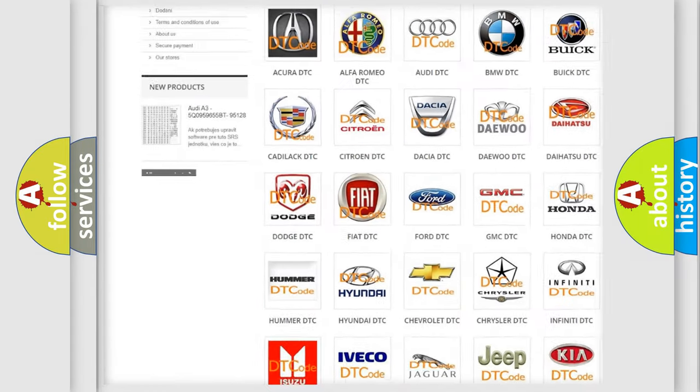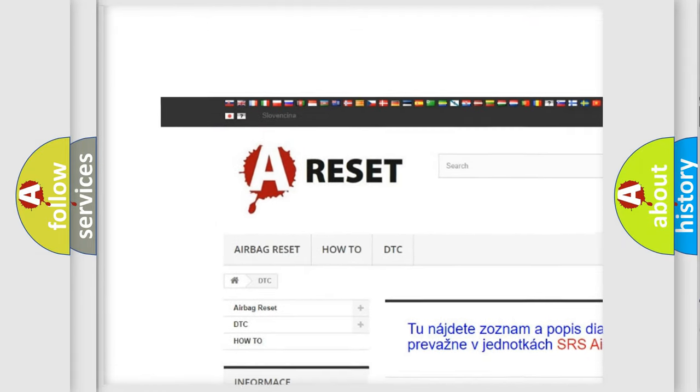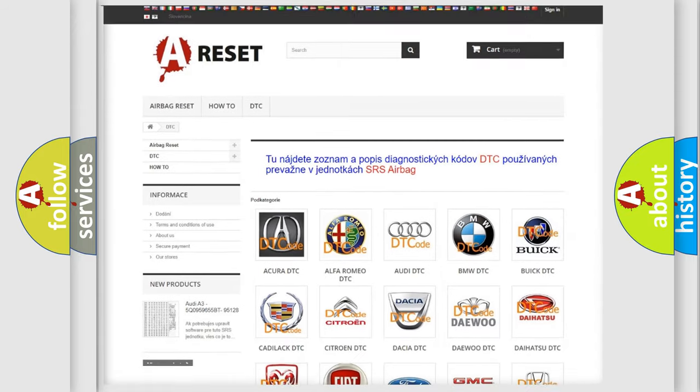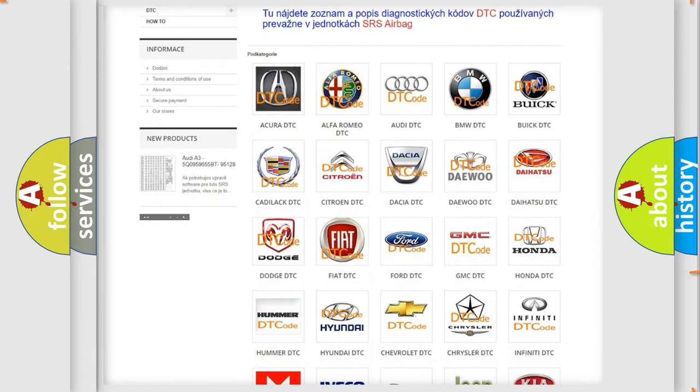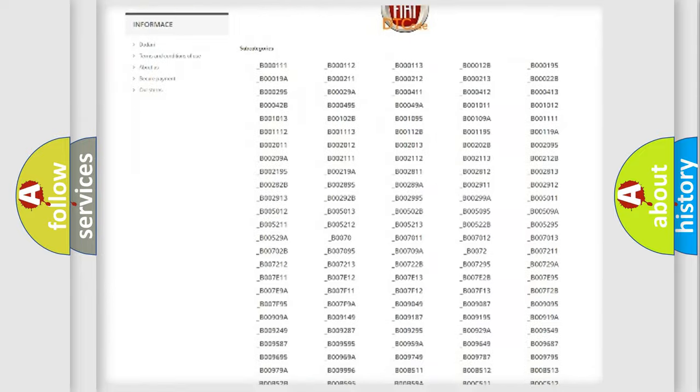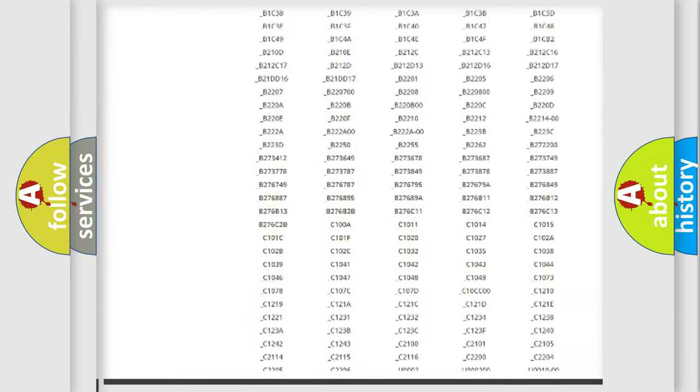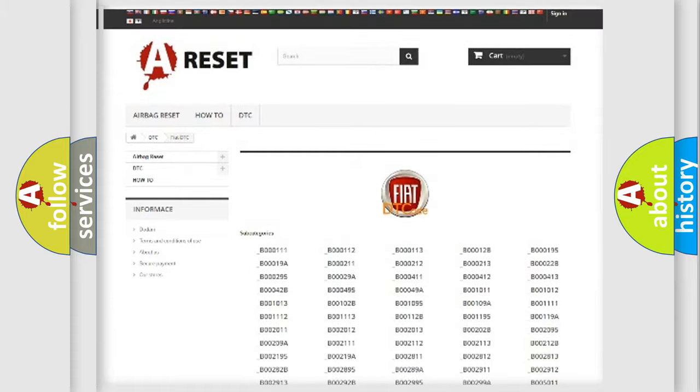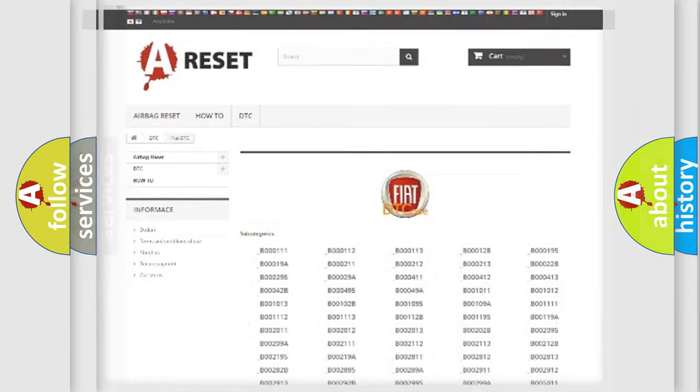Our website airbagreset.sk produces useful videos for you. You do not have to go through the OBD2 protocol anymore to know how to troubleshoot any car breakdown. You will find all the diagnostic codes that can be diagnosed in Fiat vehicles, and also many other useful things.